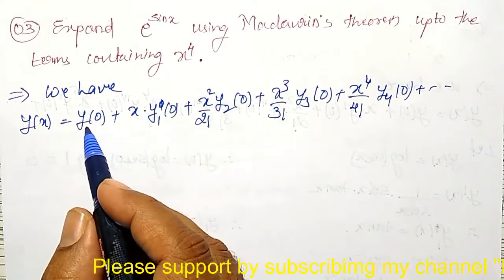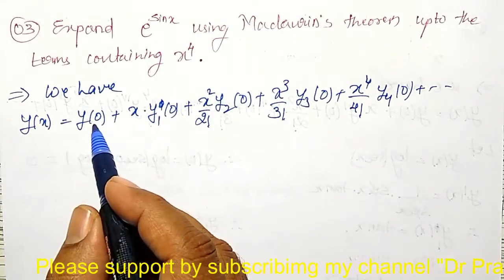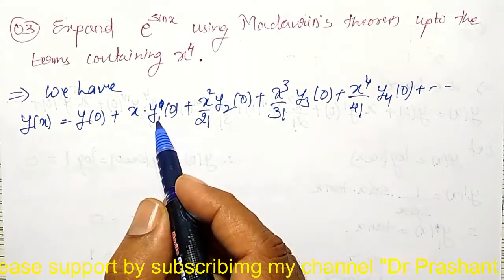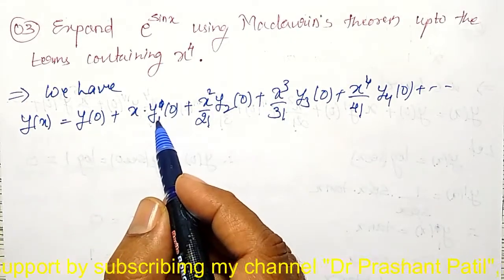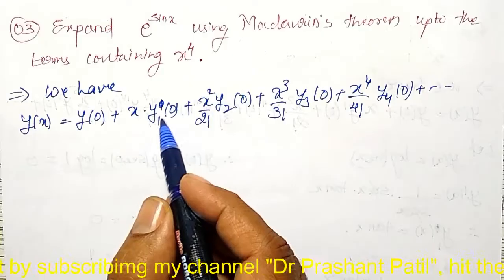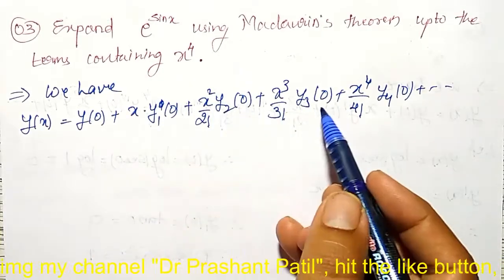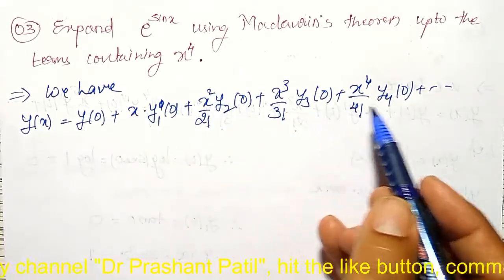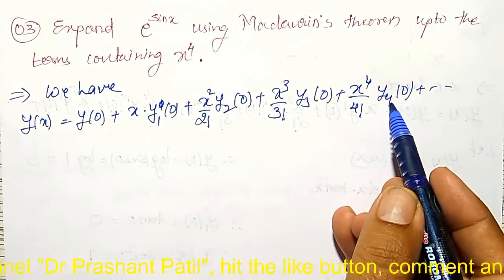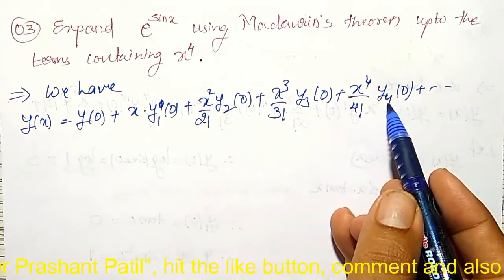We have y(x) equal to y(0) plus x into y1 at 0 plus x squared by 2 factorial into y2 at 0, next x cubed by 3 factorial into y3 at 0 plus x to the power 4 by 4 factorial into y4 at 0 plus so on. Here, y value at x equal to 0, y1 means first derivative at x equal to 0, second derivative at 0, third derivative and fourth derivative at x equal to 0.